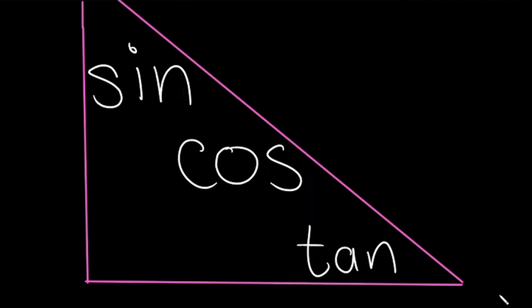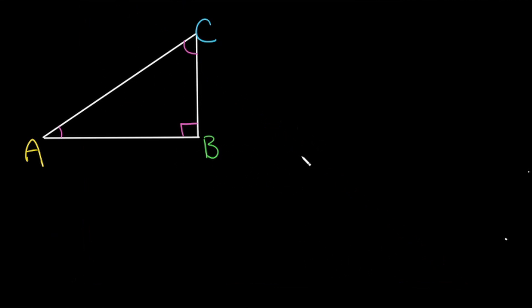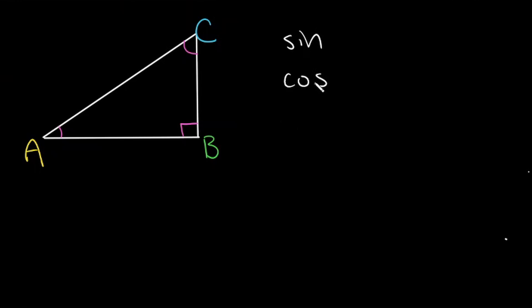Sine, cosine, and tangent. A trigonometric function is a ratio between the sides of a right triangle. The three main ones are sine, cosine, and tangent.